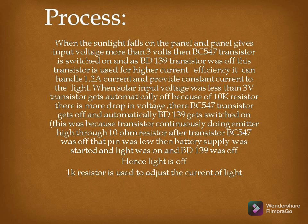When the BC547 transistor turns off, the BD139 transistor automatically turns on. It continuously drives the emitter high through the 10 ohm resistor. After BC547 turns off, that pin goes low, battery supply starts, and the light turns on. When input voltage increases again, BC547 turns on and BD139 turns off, switching the light off. A 1K resistor is used to adjust the current to the light.